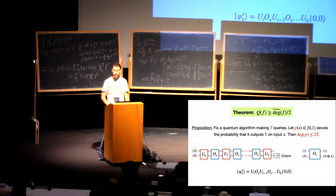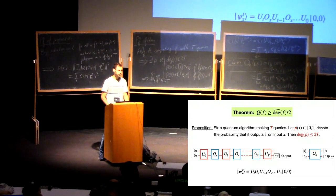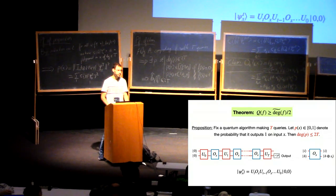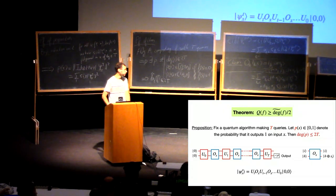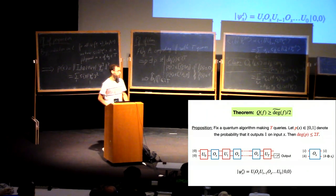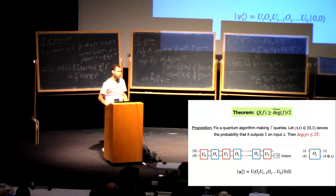Now let's apply this theorem to obtain concrete lower bounds. To handle measurement and extra workspace, you can replace measurement by controlled-NOT operations and apply unitaries on a larger space; the proof follows in a similar way.